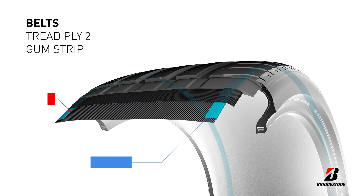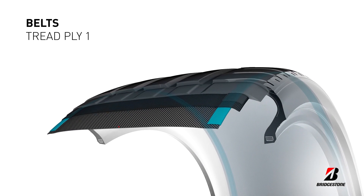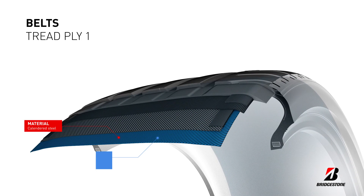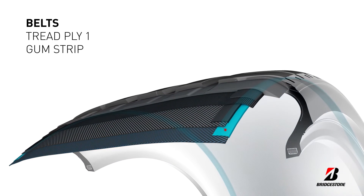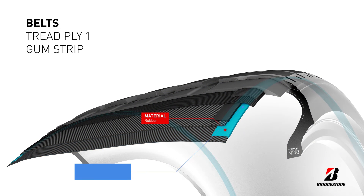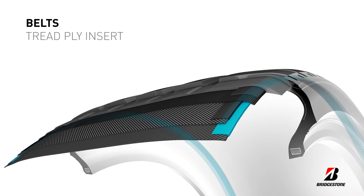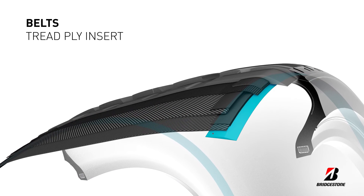The gum strip is made of rubber and protects the edges of tread ply 2. Below tread ply 2, there is another tread ply for extra durability, puncture resistance and improved handling. This tread ply is also reinforced with a gum strip to protect it from the edge of tread ply 2. The last of the belts is the tread ply insert, constructed to protect the body ply from the edge of tread ply 1.